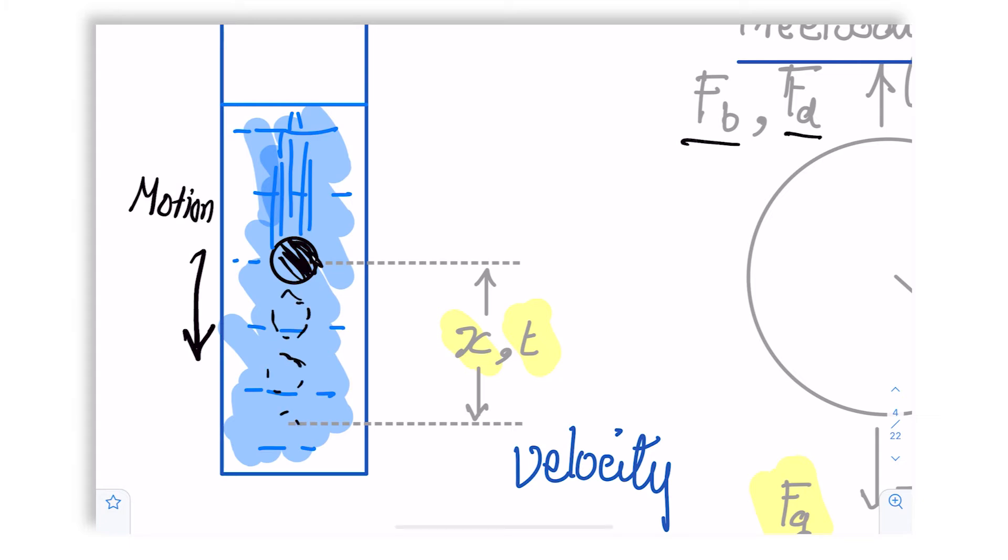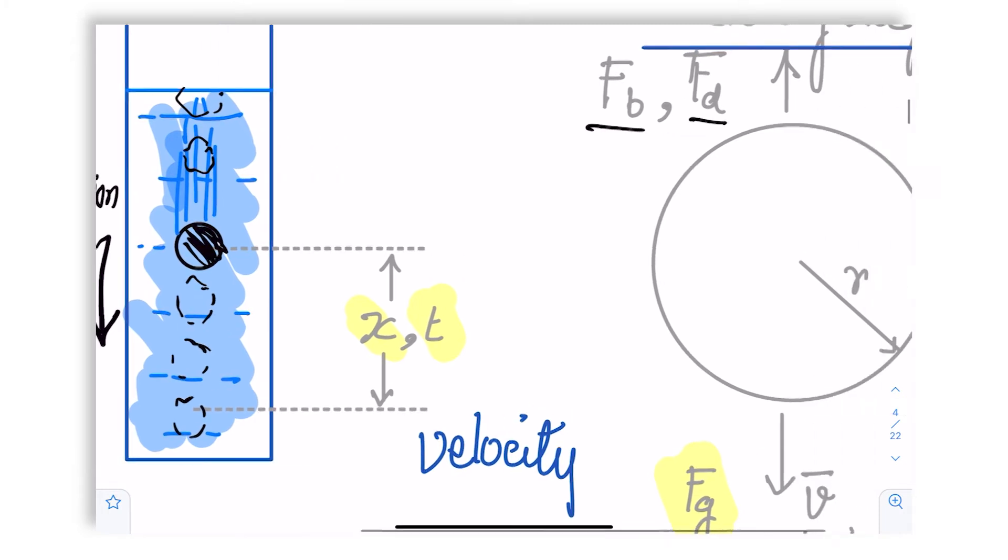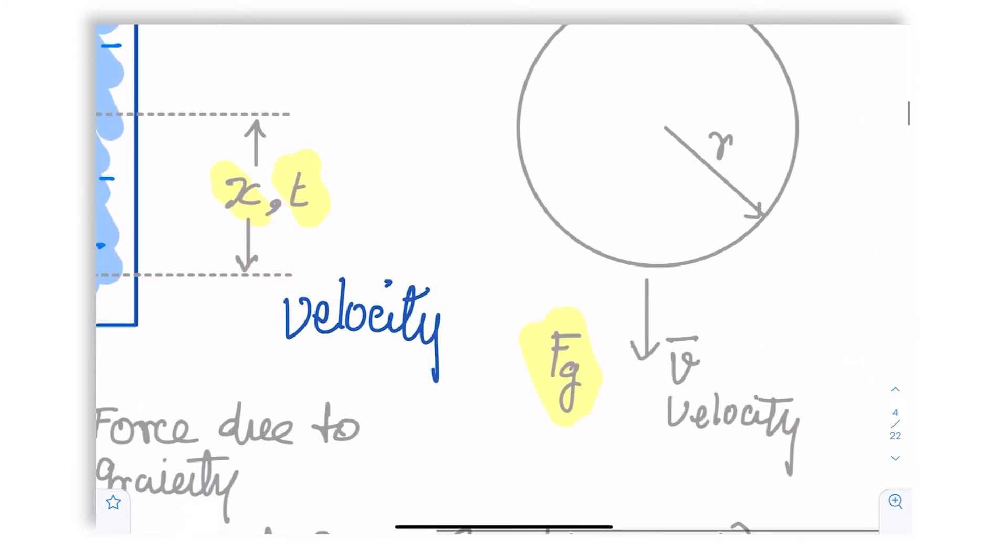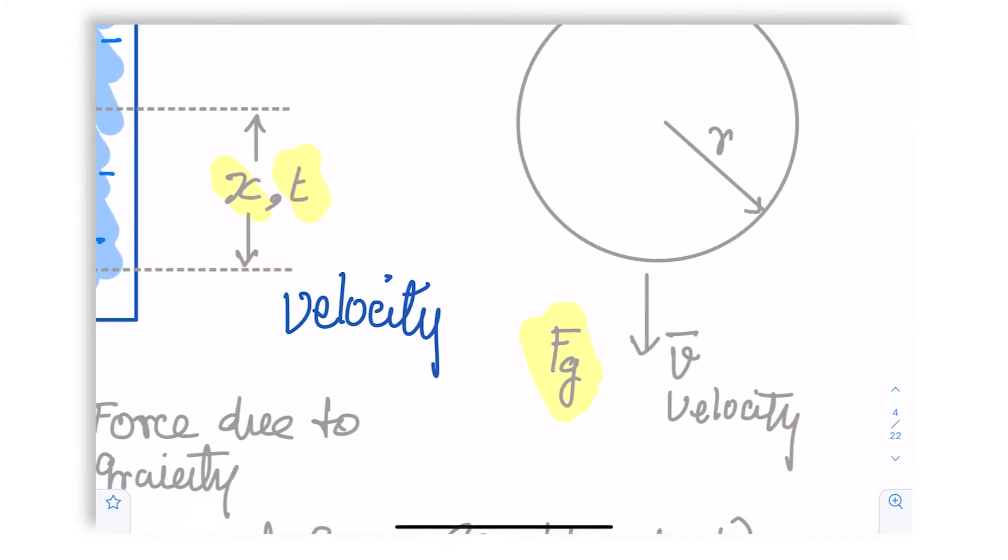And over time eventually it will hit bottom. Obviously, for this experiment to work, we have to take a ball that is heavy enough. At the same time, what is taking it down? This is also fairly obvious to us. It is the gravitational force, which then we call FG.